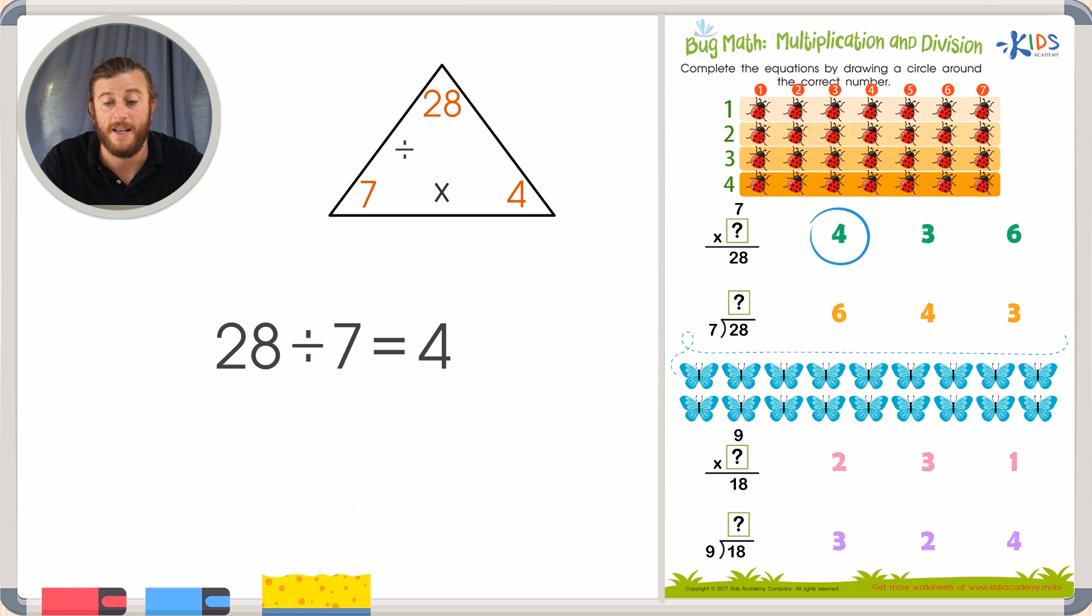So I'm pretty confident that 7 times the unknown number, that unknown number is 4. So 7 times 4 also equals 28. And these are 2 equations inside of this fact family involving the numbers 28, 7, and 4.